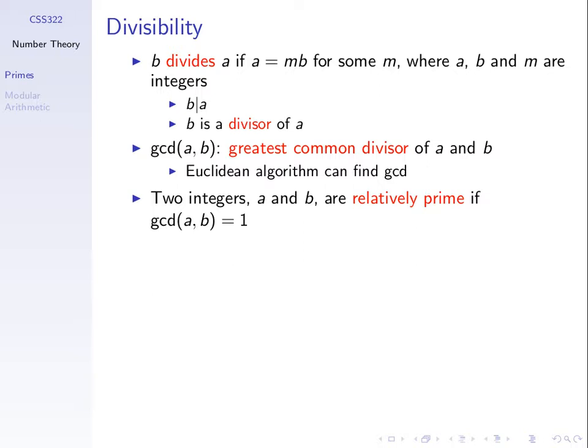We can also look at two numbers and find the greatest common divisor. The greatest common divisor of 10 and 15 is 5. The divisors of 10 are 1, 2, 5, 10. The divisors of 15 are 1, 3, 5, 15. The greatest common number is 5. There are algorithms to find the greatest common divisor more efficiently when we have large numbers — we're not going to cover the Euclidean algorithm, but there are ways to implement that.